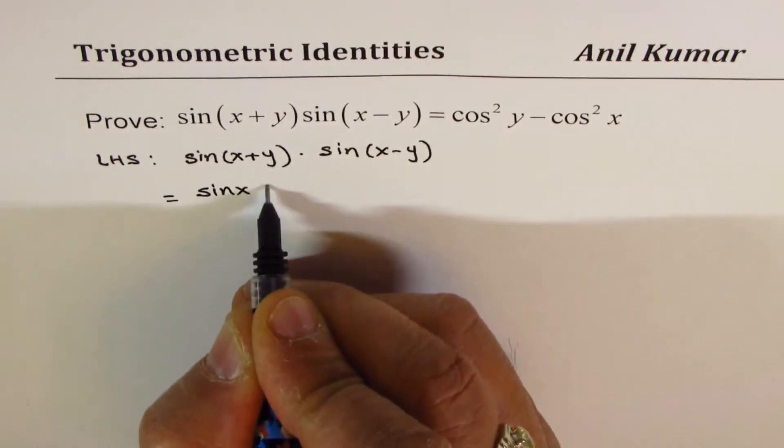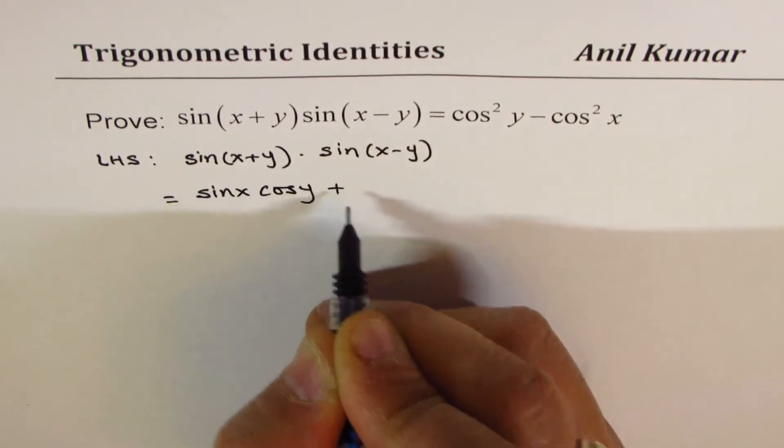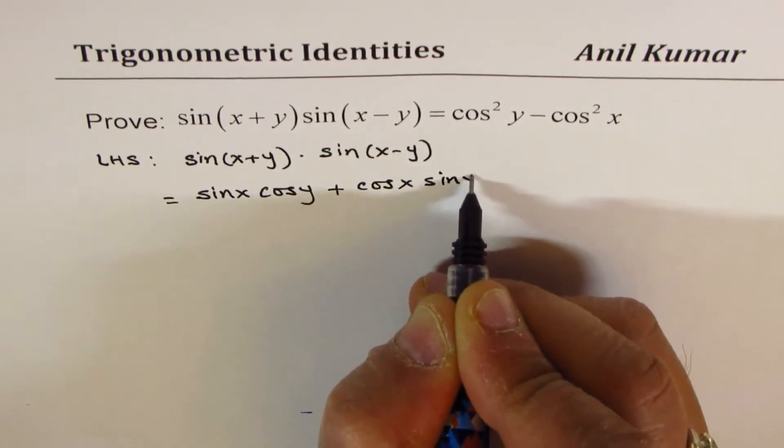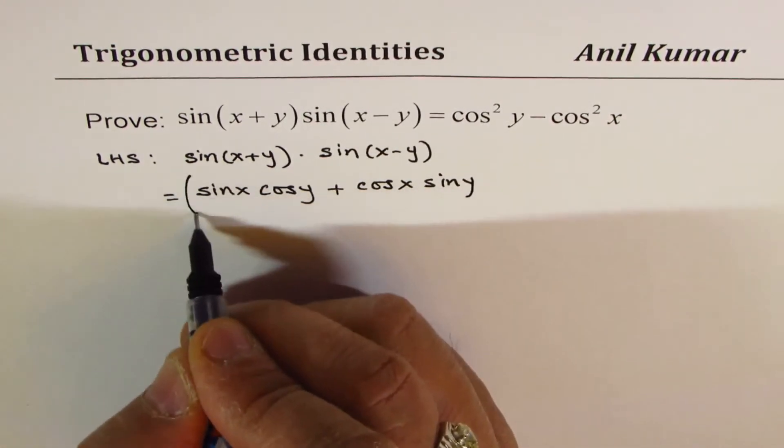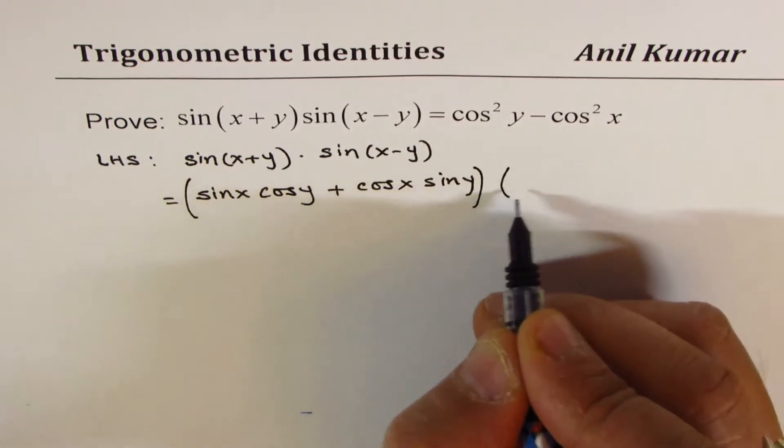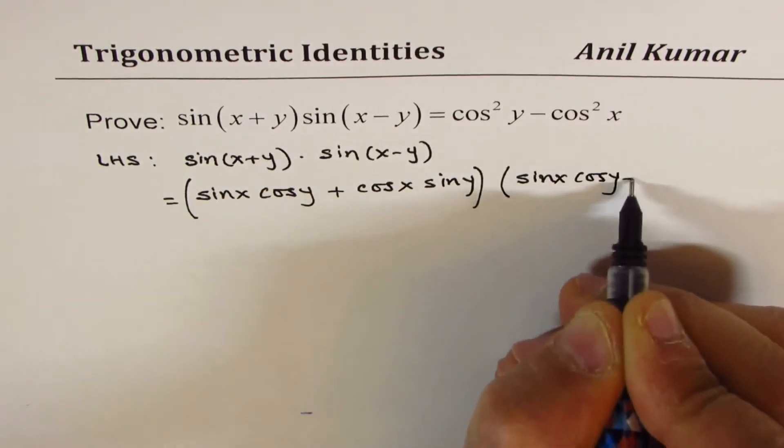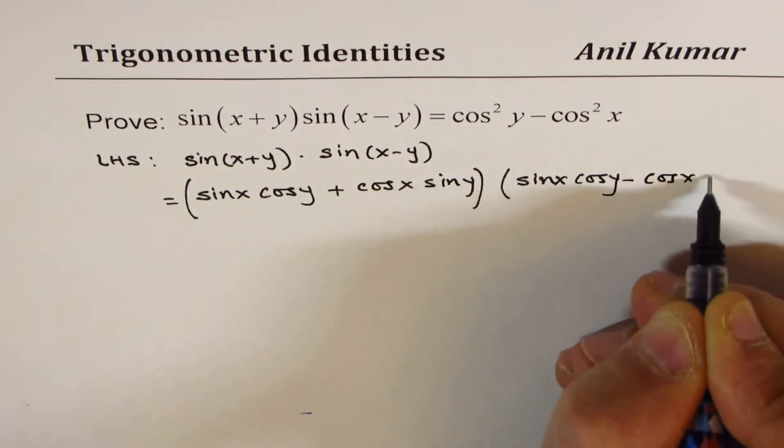We get sinx cosy plus cosx siny. For sin(x - y), we get sinx cosy minus cosx siny.